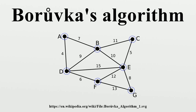For each component C of T: begin with an empty set of edges S; for each vertex V in C, find the cheapest edge from V to a vertex outside of C, and add it to S; add the cheapest edge in S to T. Output: T is the minimum spanning tree of G, as in Kruskal's algorithm.